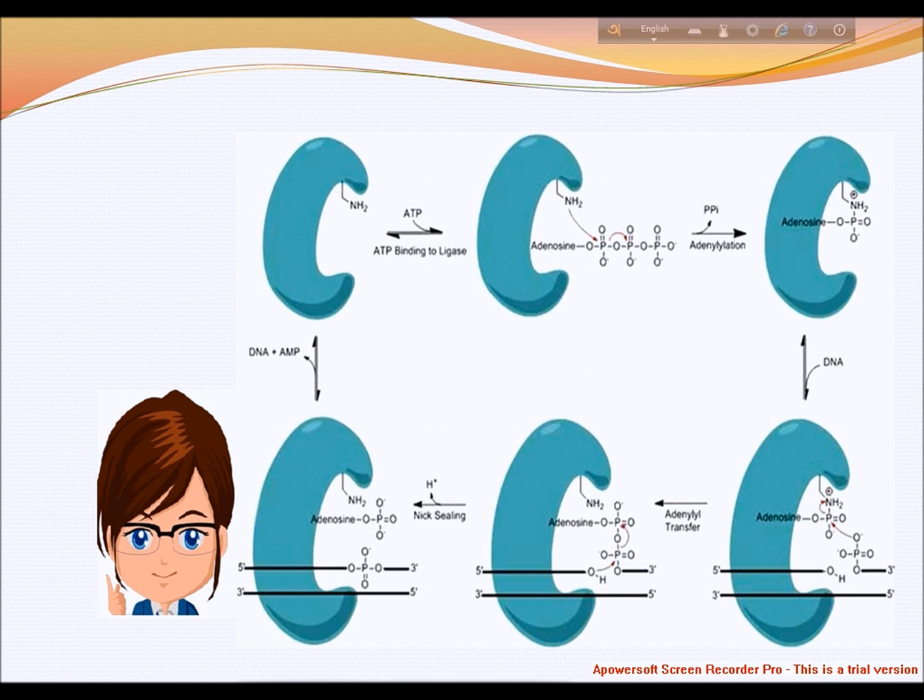Next one is mammalian ligases. In mammals, there are four specific types of ligases. DNA ligase 1 ligates the nascent DNA of the lagging strand after ribonuclease H has removed the RNA primer from the Okazaki fragments.